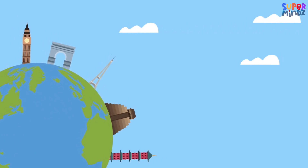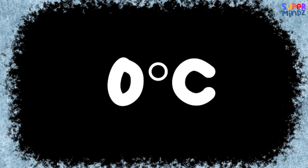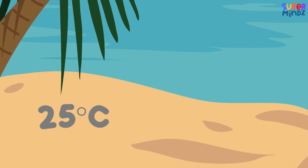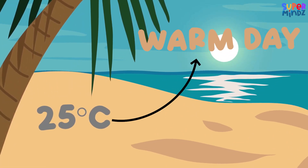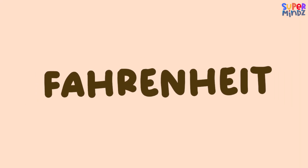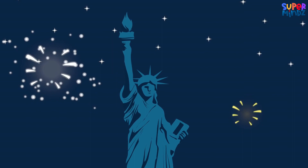Celsius: this scale is commonly used in many countries around the world. Water freezes at zero degrees Celsius and boils at 100 degrees Celsius. For example, if it's 25 degrees Celsius outside, it's a warm day.